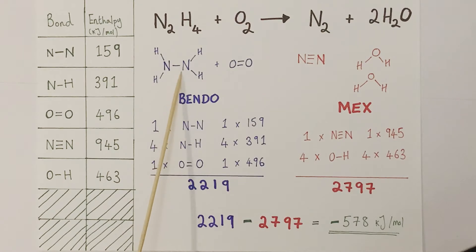So I can see there's one NN bond, four NH bonds and one oxygen oxygen double bond. So I make a list of those for my reactants. I then bring in the associated bond enthalpies from the table, multiplying where necessary if there's more than one of that bond, and then create my subtotal for the bond energies of those reactants and the bonds within those reactants, which is 2219.